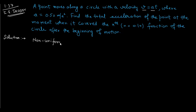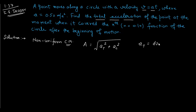In non-uniform circular motion, the total acceleration is given by a equals the square root of the tangential acceleration squared plus the centripetal acceleration squared. The tangential acceleration equals the rate of change of speed with respect to time — substituting v equals at, we get the tangential acceleration equals a, which is 0.50 meters per second squared.